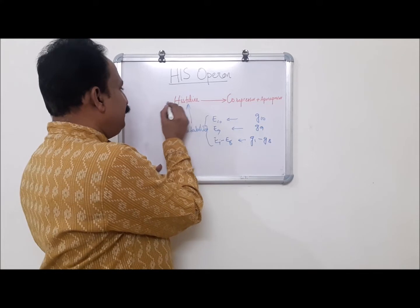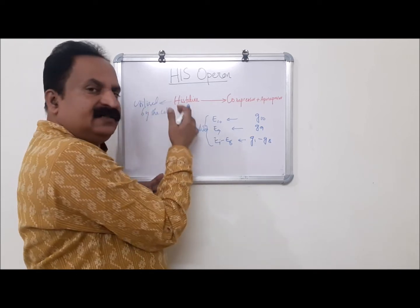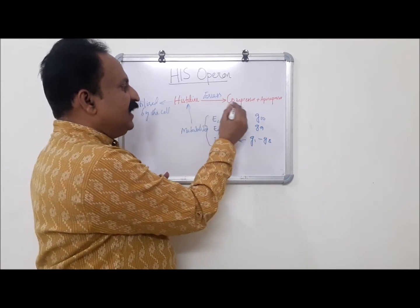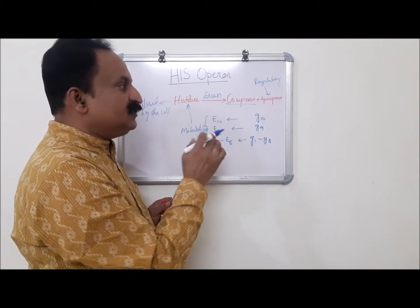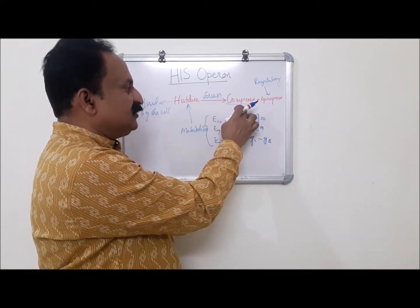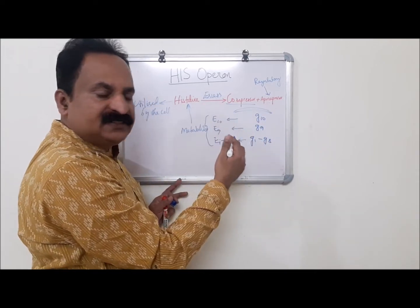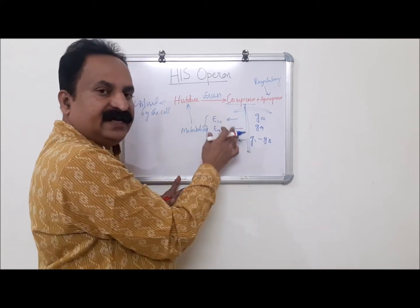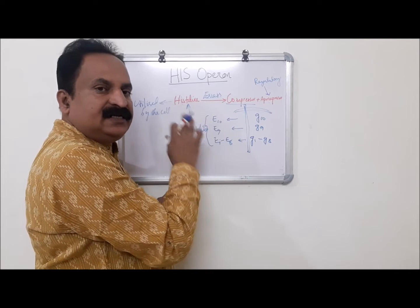When histidine is formed, it will be utilized by the cell. When histidine is in excess, it acts as a corepressor. This aporepressor is produced by the regulator gene. The operon consists of regulator, operator, and promoter genes. Excess histidine combines with the aporepressor to form the repressor molecule, transcription is blocked, enzyme production ceases, and histidine synthesis stops.